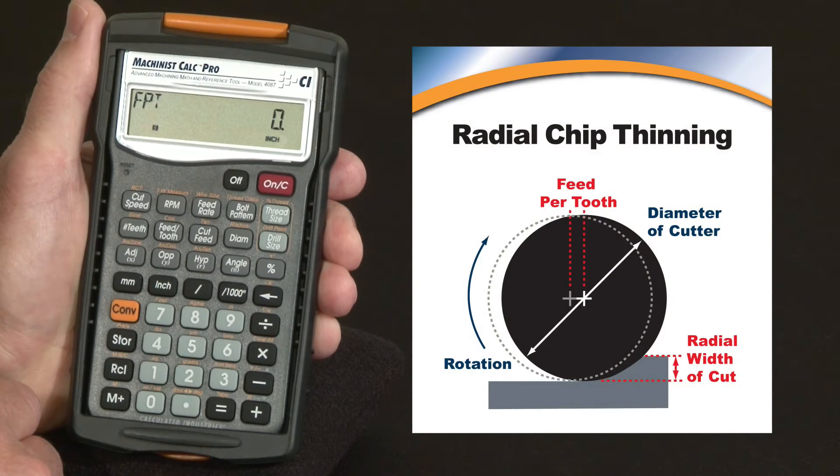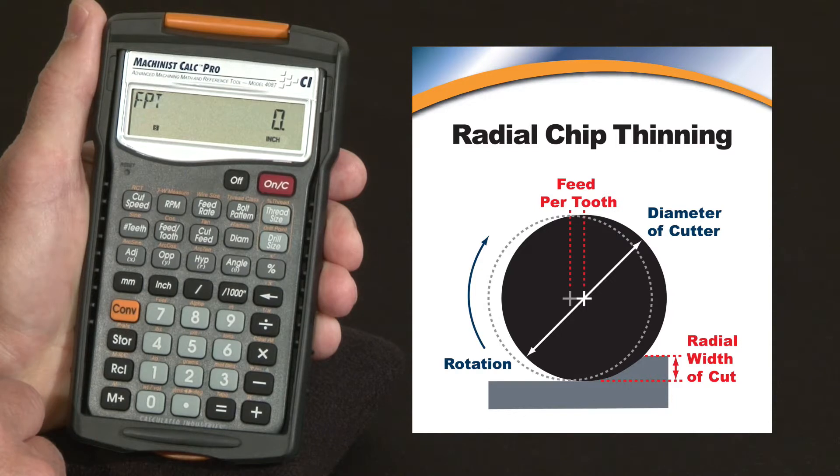Now let me show you how your Machinist Calc Pro's radial chip thinning function can help optimize your speed and feed calculations.